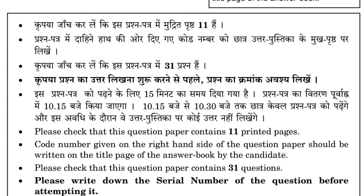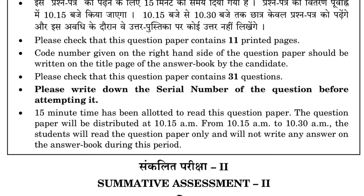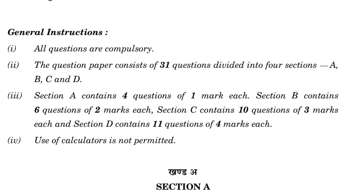We need to check the number of printed pages — 31 questions are there. They have been divided into four sections: A, B, C, and D. Section A contains four questions of one mark each, Section B contains six questions of two marks each, Section C contains ten questions of three marks each, and Section D contains eleven questions of four marks each.